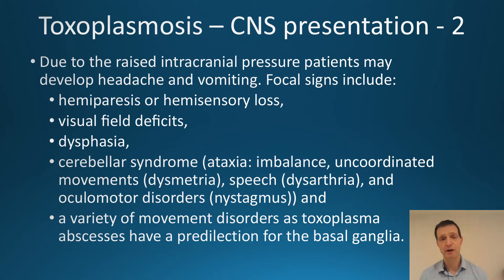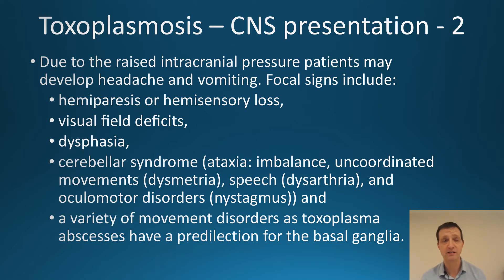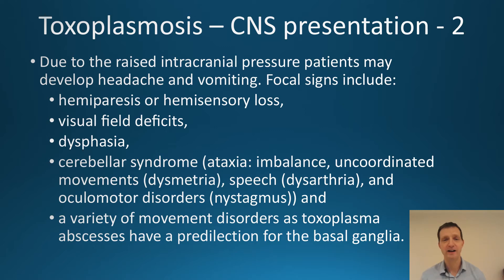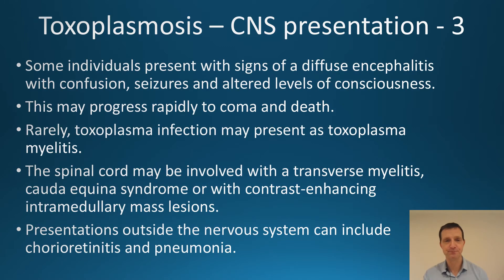Due to rising intracranial pressure, patients may develop headache and vomiting. They may also present with a range of focal signs including hemiparesis or hemisensory loss, visual field defects, dysphagia, cerebellar syndrome — which is a form of ataxia involving imbalance and uncoordinated movements — difficulties in speech, oculomotor disorders, and a variety of movement disorders, as Toxoplasma abscesses have a predilection for the basal ganglia. Some individuals present with signs of diffuse encephalitis with confusion, which can progress readily to coma and death.